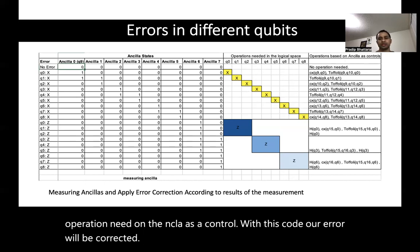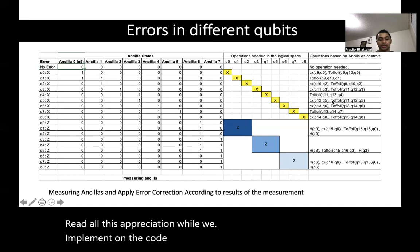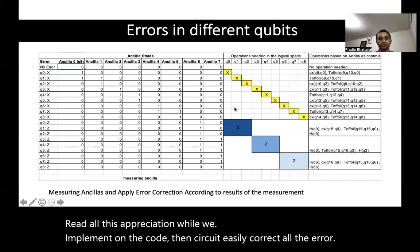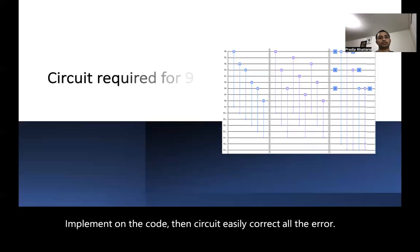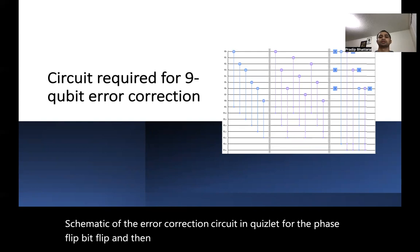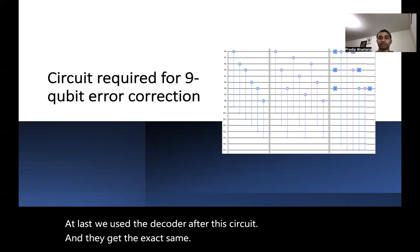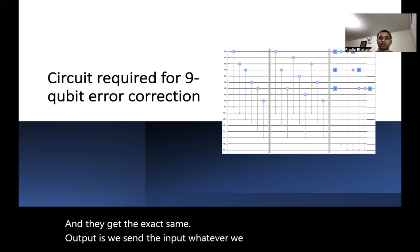With all these operations implemented in the code, the circuit can correct all the errors. This is the schematic of the error correction circuit in Qiskit for phase flip, bit flip, and their superposition (Z error). Finally, we use a decoder at the end of the circuit, and we get the exact same output as the input we sent in.